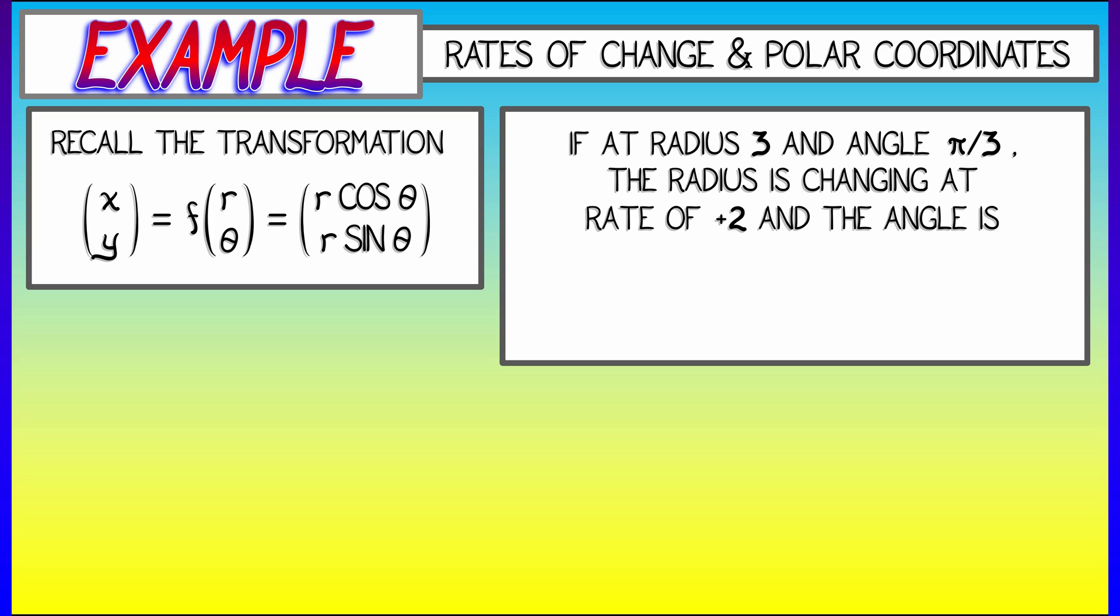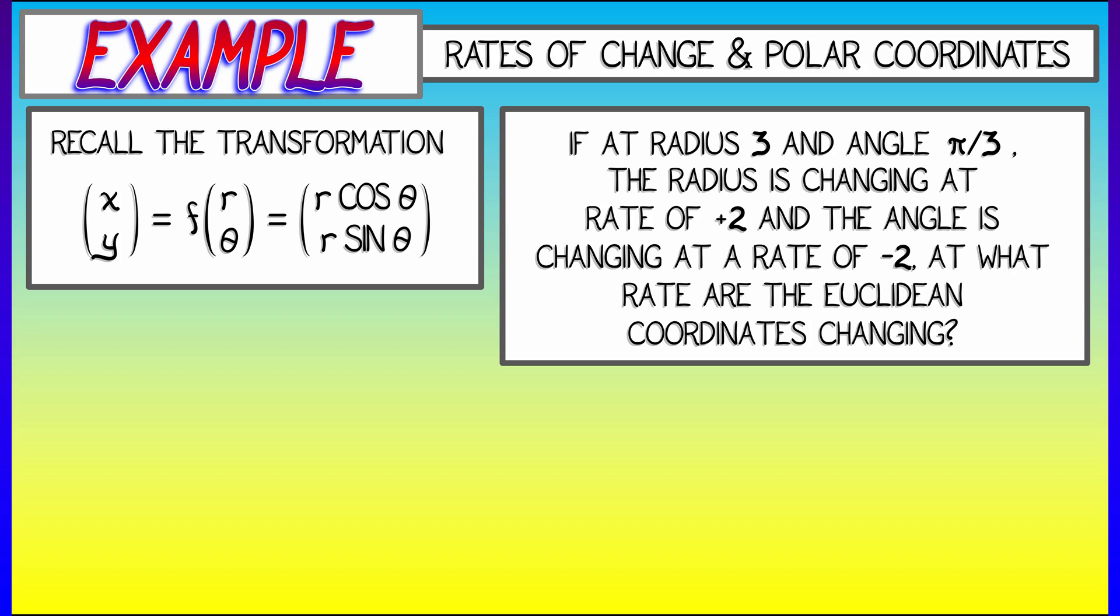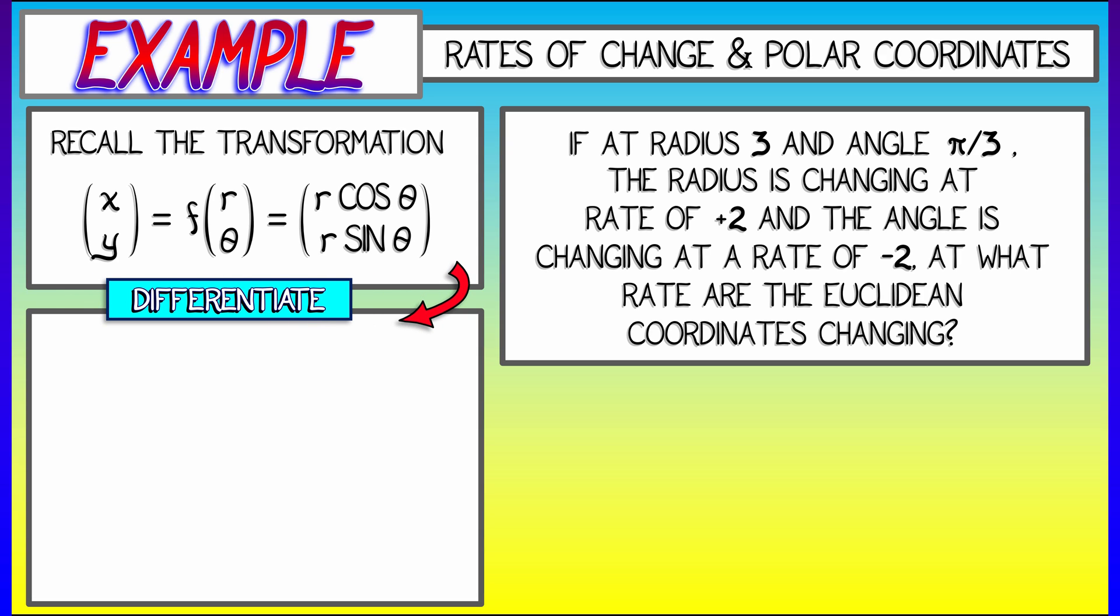If we say that the radius is 3, the angle is pi over 3, we're increasing the radius at a rate of plus 2, and decreasing that angle theta at a rate of minus 2, then at what rates are the Euclidean coordinates changing?